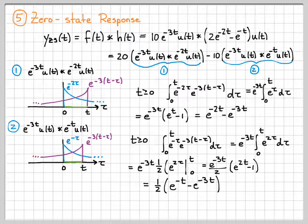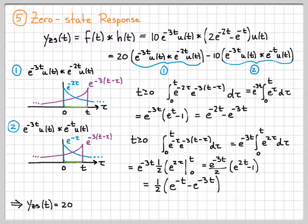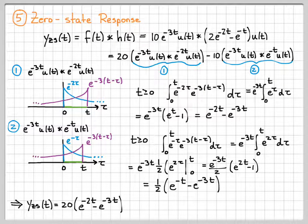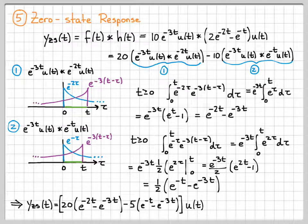So let's go ahead and piece these together. This is one. This is two. When I piece it together, I have to multiply 20 times one and then subtract off 10 times two. So my zero state response is going to be 20 times one minus five times, you know, 10 over two is five times this quantity right here. And then everything has a unit step on it. So that is my zero state response.